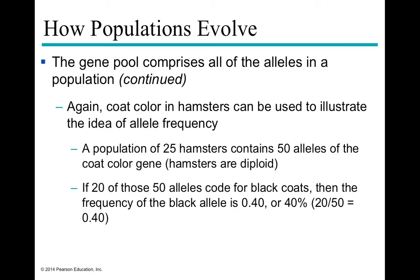For coat color in hamsters, we have two alleles — a simplified version, as some genes have three or more alleles, though an individual can only carry two. If a population of hamsters has 25 individuals, there are 50 alleles of coat color. If 20 out of 50 code for black, then the frequency of the black allele is 0.4 or 40%, calculated by dividing 20 by 50.